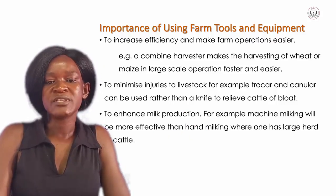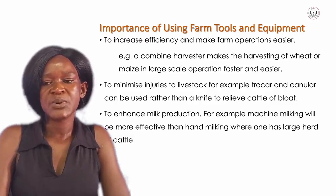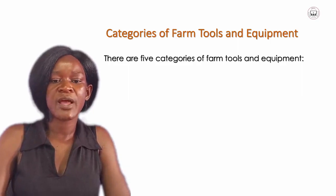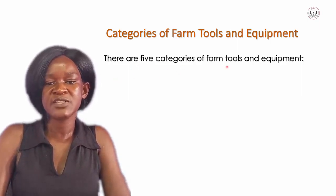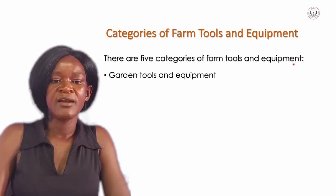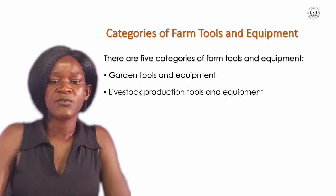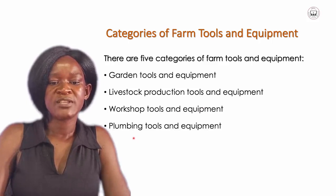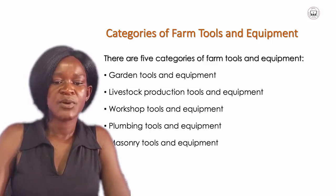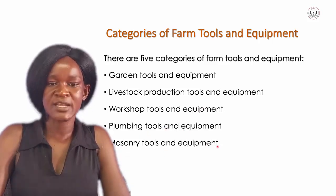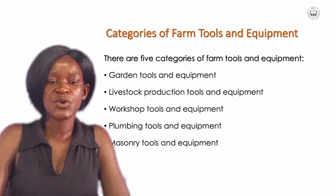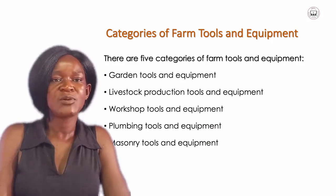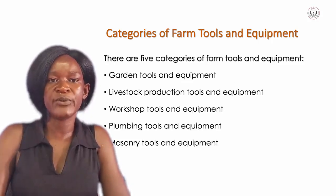Now let us look at the categories of farm tools and equipments. These are categorized into five: garden tools and equipments, livestock production tools and equipments, workshop tools and equipments, plumbing tools and equipments, and masonry tools and equipments. All these will aid agricultural production, whether in crop production or animal production. Let us now describe each category.